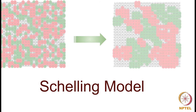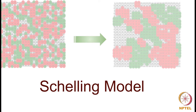The Schelling model shows how the effect of homophily that operates at a local level leads to some interesting global patterns in the network. In this video, we're going to implement this model and observe the patterns that emerge.